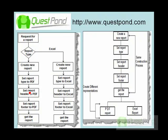Let's understand this with a software example. I am representing a simple example where my reports need to be displayed either in Excel format or in PDF format. So I have two types of representation for my report. In order to construct these two objects, I need to execute some steps: create a new report, set the report type, set the report header, set the report footer, and finally get the report. This is my construction process.